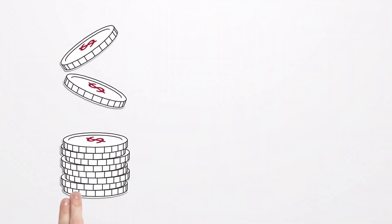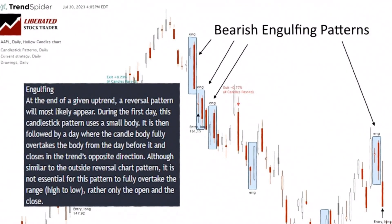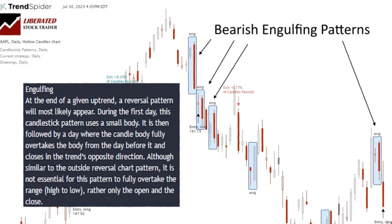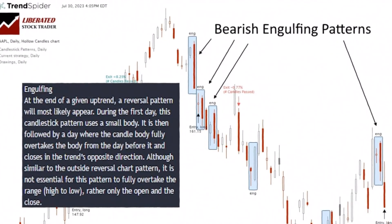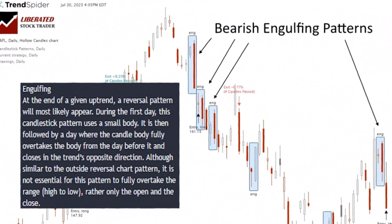In contrast, bearish patterns like the bearish engulfing pattern signal a change from bullish to bearish sentiment with a 57% success rate. This bearish pattern yields an average profit of 0.62% per trade. The data suggests a bearish engulfing candle can occur during an uptrend or downtrend and can be a reversal or continuation pattern.